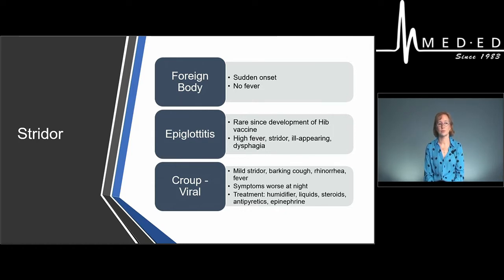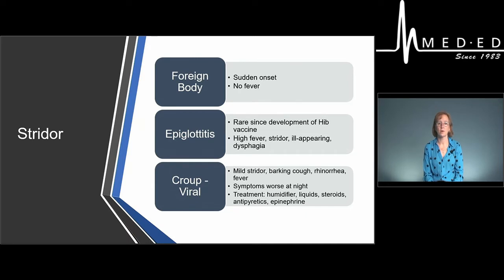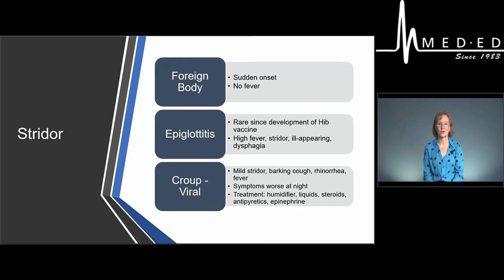More commonly what you'll see is croup, which is viral. Multiple organisms can cause it — parainfluenza, influenza, and measles. These kids have much milder symptoms than epiglottitis. The hallmark finding is a barking cough that sounds like a seal bark. They'll have rhinorrhea and fever, which might be low grade or pretty high. I tell parents that once they hear that cough, they'll recognize it anywhere.